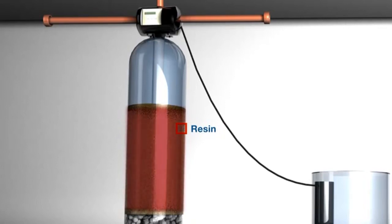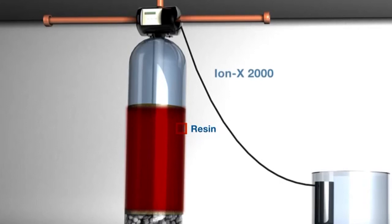ProSystems water softeners use Dow's IONX 2000. There are several brands available, but we choose to use IONX 2000 because of its long life and its resistance to chlorine.